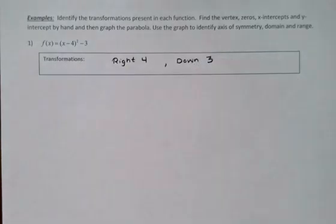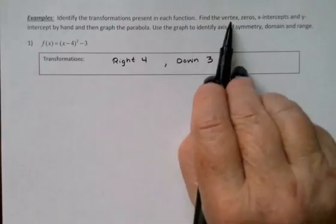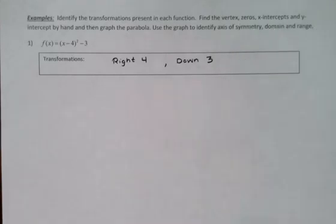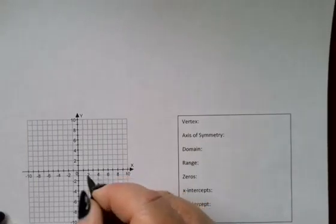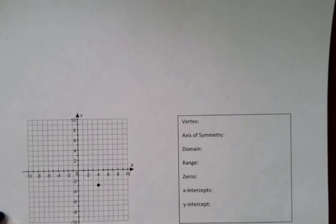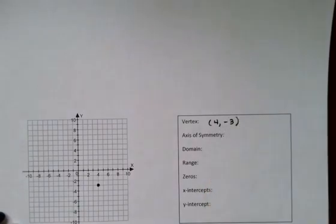So those are the two transformations that I'm going to want to draw. We're also being asked to find the vertex, zeros, x and y intercepts. If I've gone to the right 4 and down 3, my new vertex is right there. So the new vertex is certainly going to be (4, -3). We'll fill that in right away.